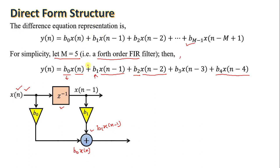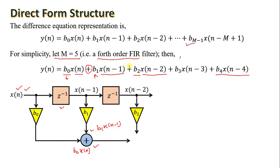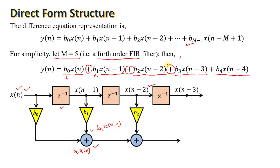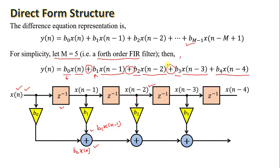There is a plus sign for addition. For X(N−2), the multiplying factor is B2; add that term. For the third term X(N−3), add another delay to get X(N−3) and multiply by B3, then add. For the last term, add another delay to get X(N−4), multiply by B4, add, and the final result is Y(N). In this way you draw the direct form structure of the FIR filter.